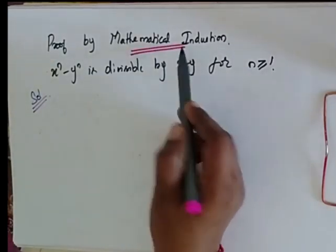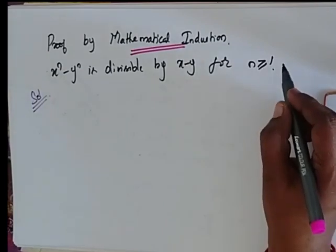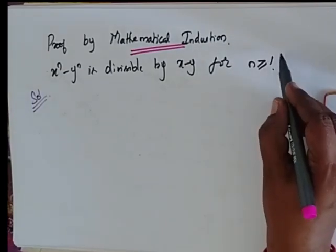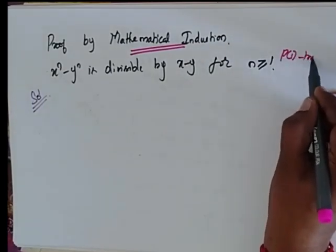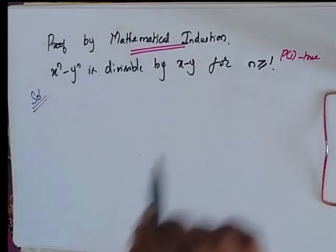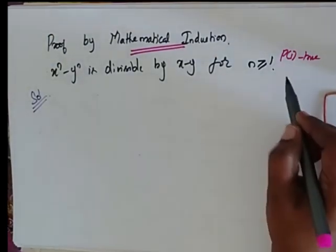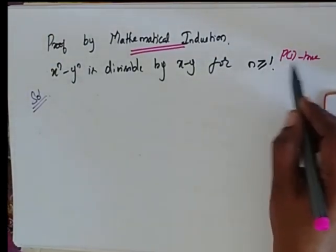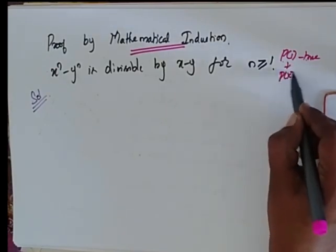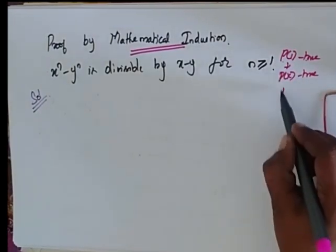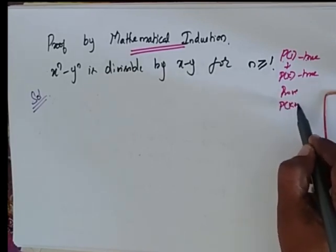Proof by mathematical induction. Whenever we use proof by mathematical induction, you have to prove that it is true for P of 1. Then, since it is true for P of 1, you say that it is true for P of K and you have to prove for P of K plus 1.